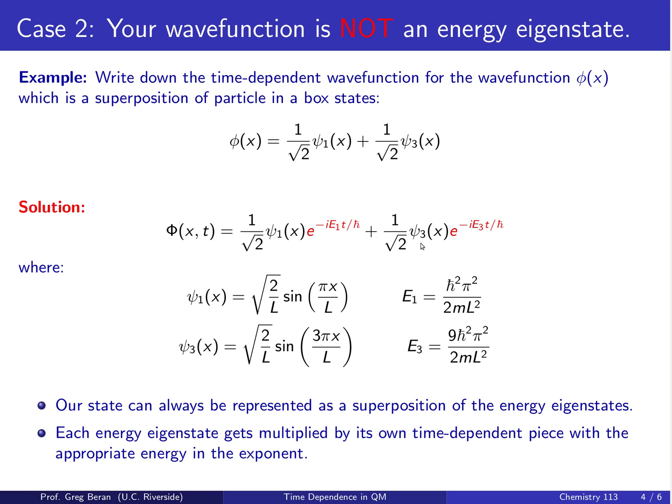Likewise, for ψ₃, we also multiply it by a time-dependent piece, but it gets a different energy up here. It gets the energy corresponding to ψ₃, which is E₃, shown here.